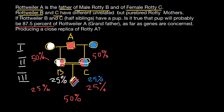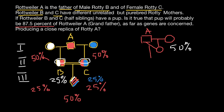Now imagine this is Rottweiler A. We mate him with some other Rottweiler, and in the progeny — let's say this is a female — it's going to be 50% genetic makeup of the father and 50% of the mother. To increase the proportion of Rottweiler A's genes, we mate the father back to his daughter. In the next progeny, female pups will resemble father A by 75%. We call this back-crossing.